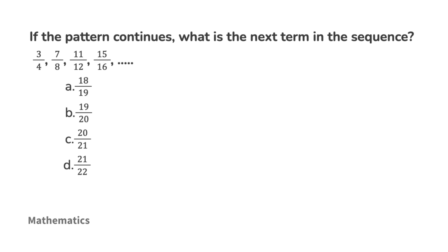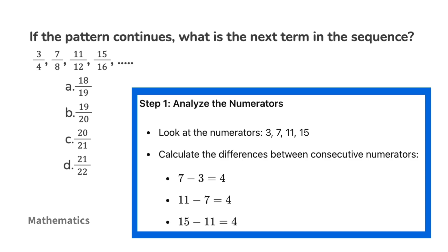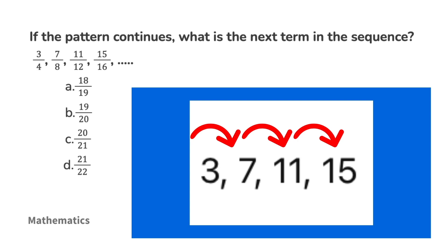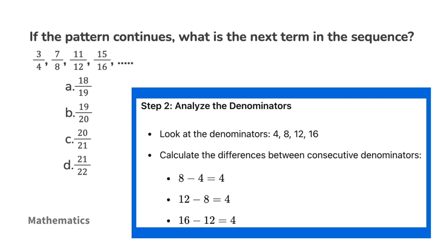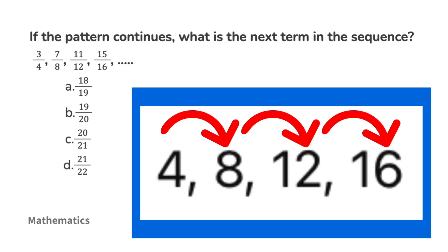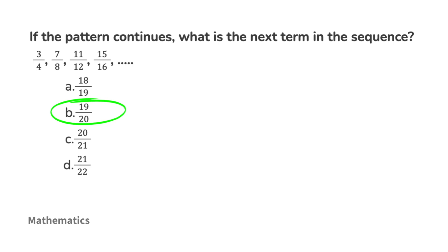If the pattern continues, what is the next term in the sequence? Solve this and come back when you're ready. To find the next term, analyze the numerators: 3, 7, 11, and 15 — these increase by 4 each time. Now analyze the denominators: 4, 8, 12, and 16 — these also increase by 4 each time. We've found the pattern, and the next term in the sequence will be 19 over 20.